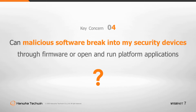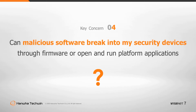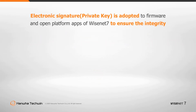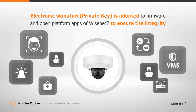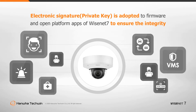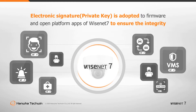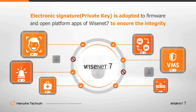Can malicious software break into my security devices through firmware or open and run platform applications? Devices compromised by malicious software can give a hacker the ability to run system actions, and this will be true for compromised open platform apps too. Wisenet 7 Security Verification checks for data integrity at boot up or after updates. An electronic signature is employed to secure open platform apps, and each app vendor is supplied with their own key to perform verification every time an app is installed. These measures can ensure the integrity of open platform apps and completely block malicious firmware or apps from operating.